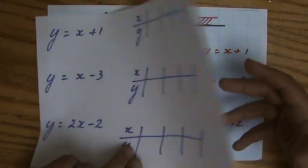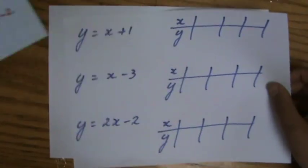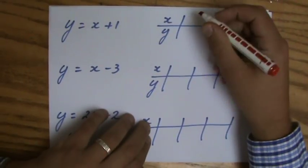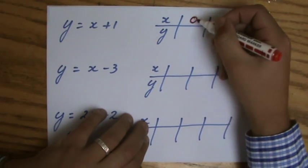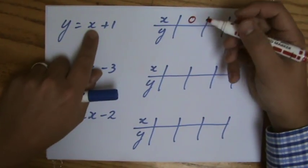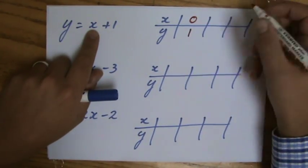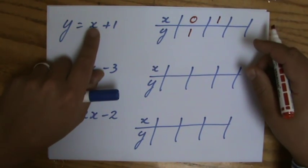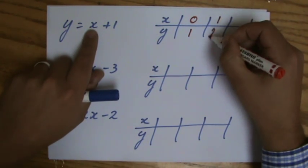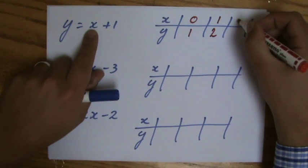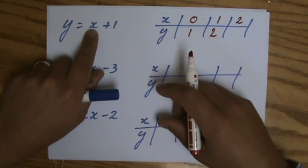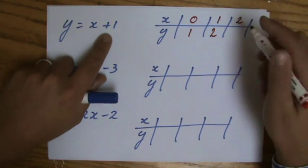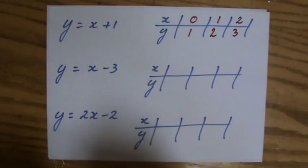That is a summary of what we've done so far. Let's have a look now — table of values, a fishbone table. I'm going to pick three points. Let's pick zero: y is zero plus one, that is one. I'm substituting the value I choose into my function. One plus one: y will be two. Choose smart numbers — I don't choose a thousand because that's not going to fit. Two plus one is going to be three. Excellent.